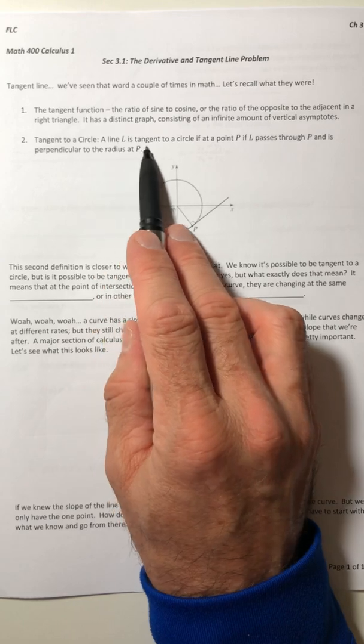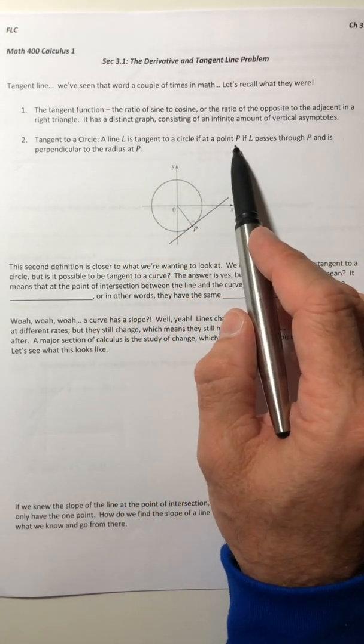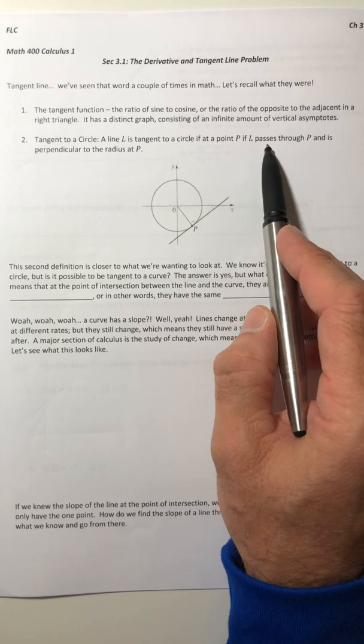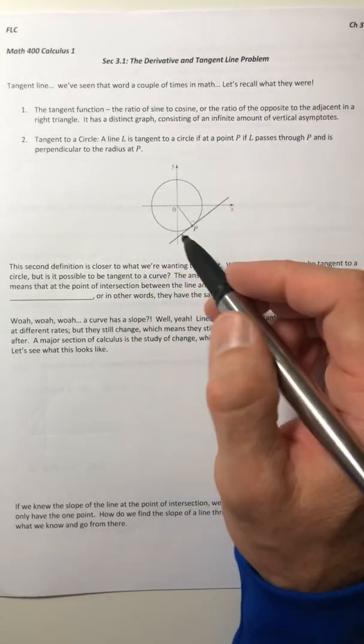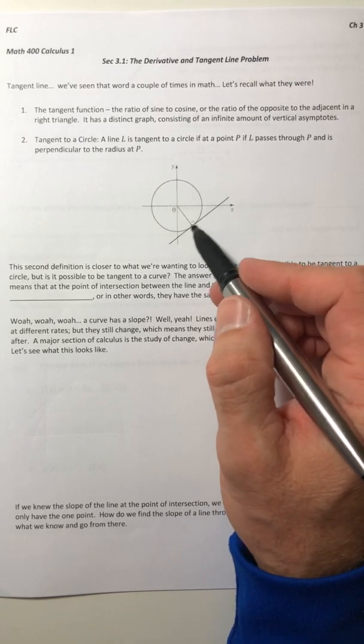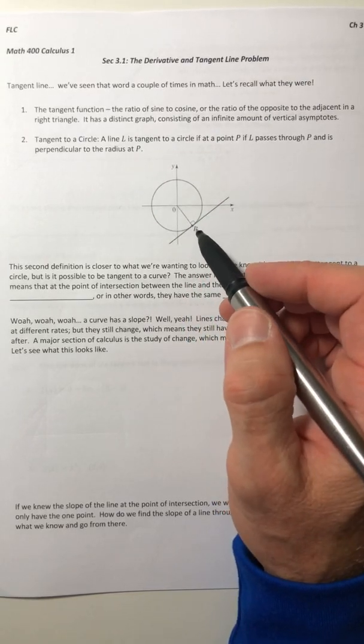So, a line L is tangent to a circle if at a point P, if it passes through P and is perpendicular to the radius at P. It just sort of kind of hits the curve or hits the circle once and kind of balances right there.